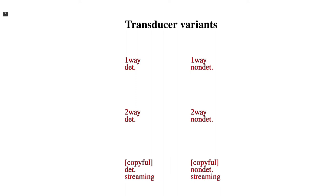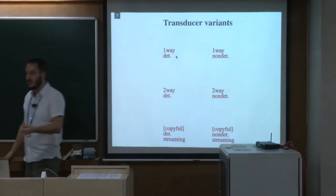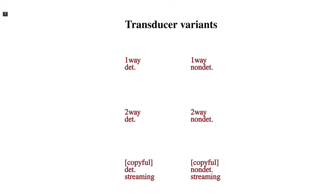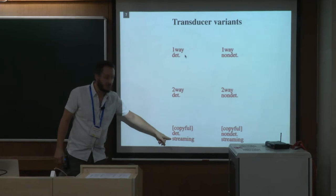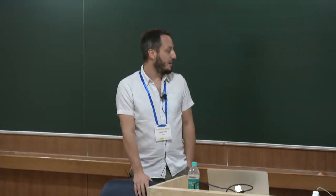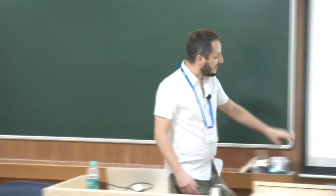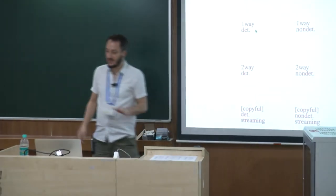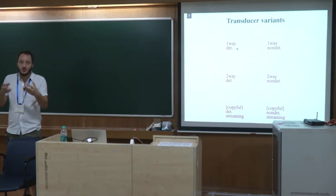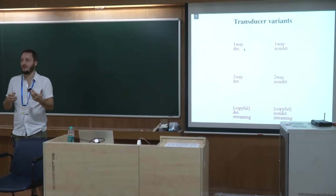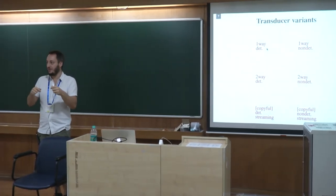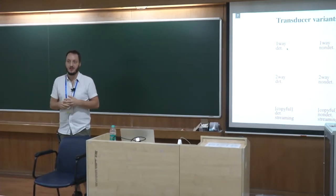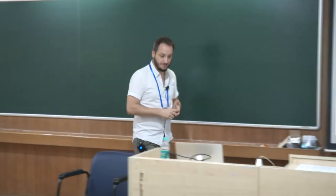The picture for transducers is similar — you get the four models from automata: one-way deterministic and non-deterministic, and two-way. I will also talk about streaming string transducers, introduced more recently by Alur and Černý. Unlike classical transducers that scan input one-way or two-way and append output along transitions, streaming transducers always scan left to right but produce output differently: piecewise, using buffers that get concatenated together.